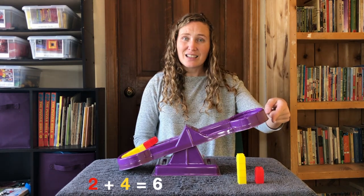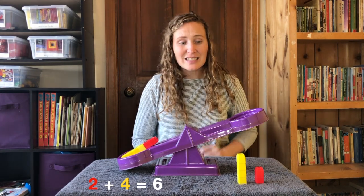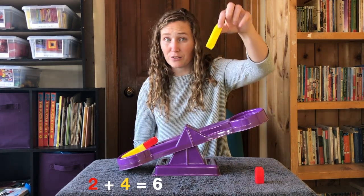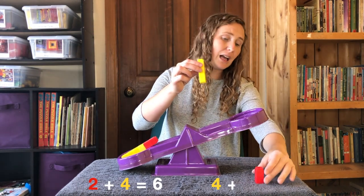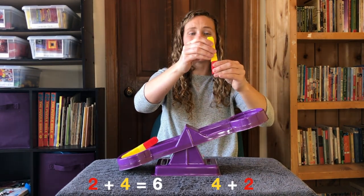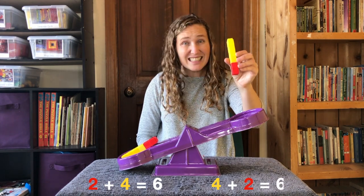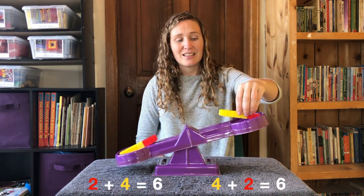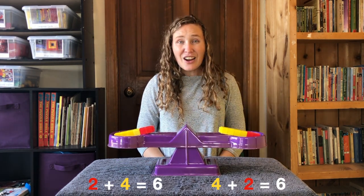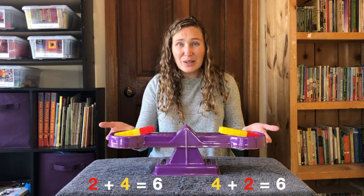Now let's add on the other side. This time, let's start with four yellow plus two red. Four plus two is still six. We put it in, and our scale is equal again.